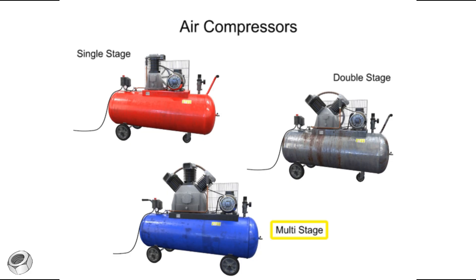If pressures of more than about 175 psi are needed, multi-stage compressors should be used. On these larger compressors, cooling may take place by circulating water instead of air. To reach a pressure of 2500 psi, as many as 6 or 7 stages may be needed, with cooling between each stage. Their versatility makes compressors one of the primary components in air production.